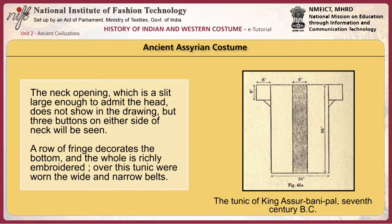This is the tunic of King Assurbanipal, 7th century BC. The neck opening, which is a slit large enough to admit the head, does not show in the drawing. But three buttons on either side of the neck will be seen. A row of fringe decorates the bottom and the whole tunic is richly embroidered. Over this tunic were worn wide and narrow belts.